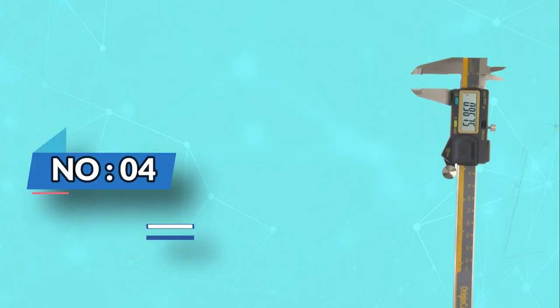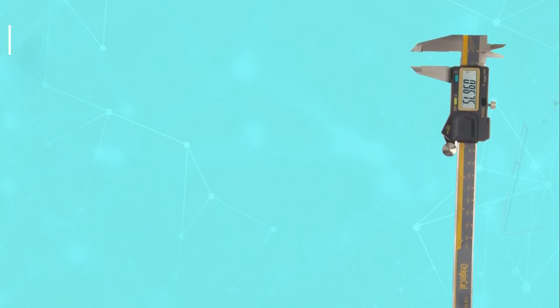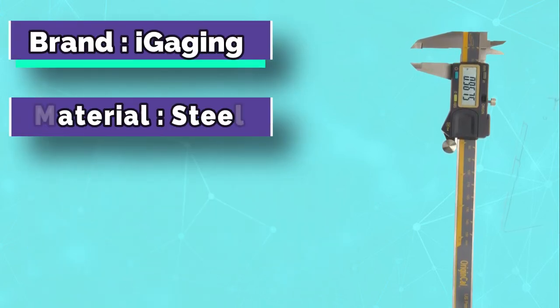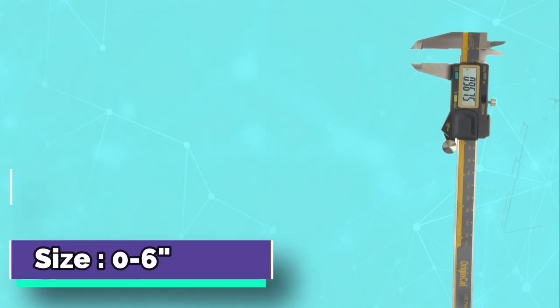Number 4, I-Gaging Digital Caliper. I-Gaging is yet another well-known producer of digital instruments. They also produce a great digital caliper that has received highly positive feedback.